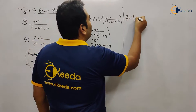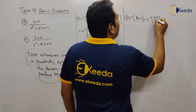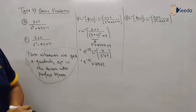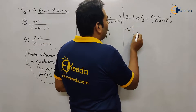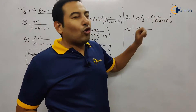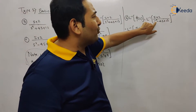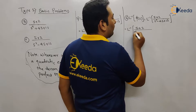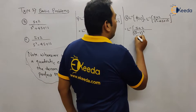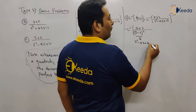Let us discuss problem number 6: Laplace inverse of F(s) = Laplace inverse of (s+2) upon (s² − 4s + 13). Again, very important note — whenever we get a quadratic equation in the denominator, make it a perfect square. Take the square root of s², that is s, this sign in between, half of 4 — half will become 2 — the whole square. If you open the bracket you get s² − 4s + 4, but here we want 13, so we need to add 9.